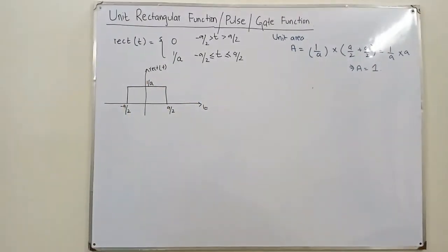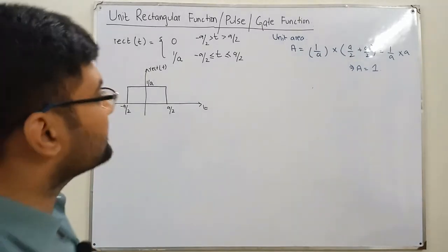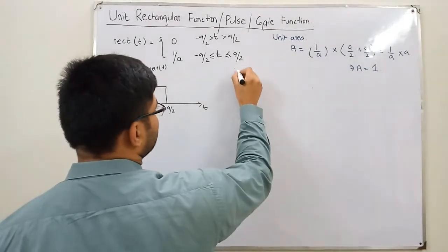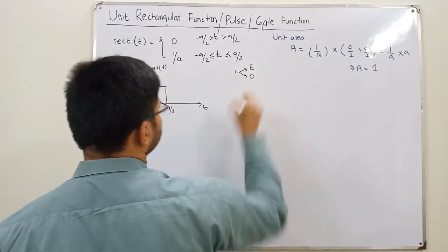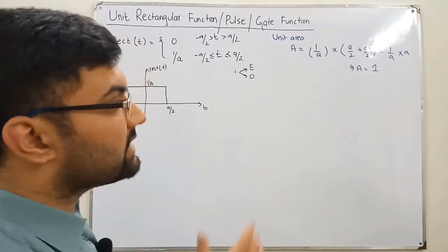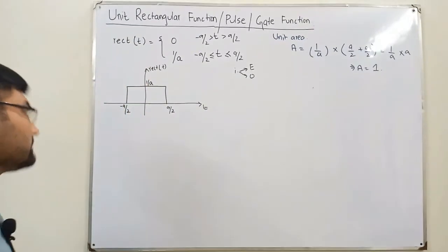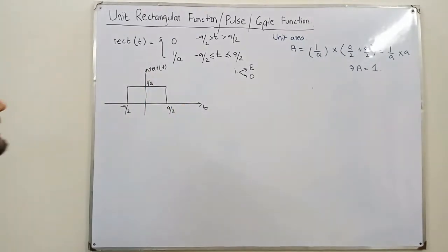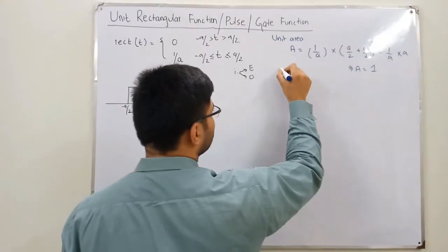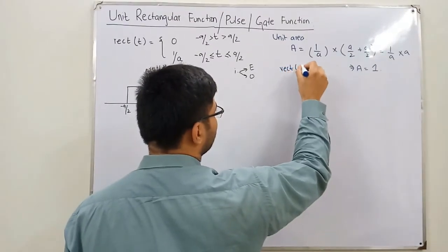Now again we check for the even and odd signal. Let's say first I check if this signal is even or is this odd. So what you do is you first take a negative t, x of negative t, which means you flip the signal about the y-axis. So if I say that we have a signal rect of minus t, so again this would be equal to the same signal.